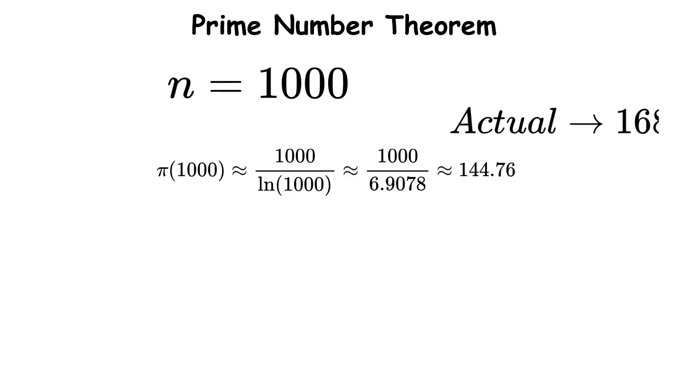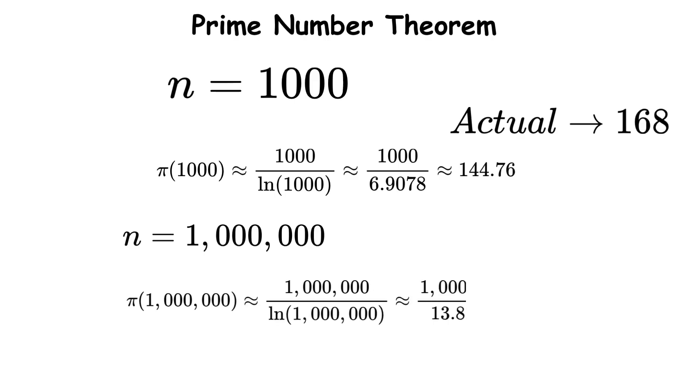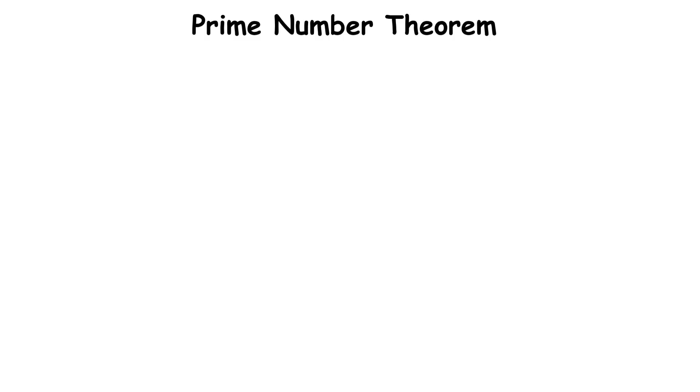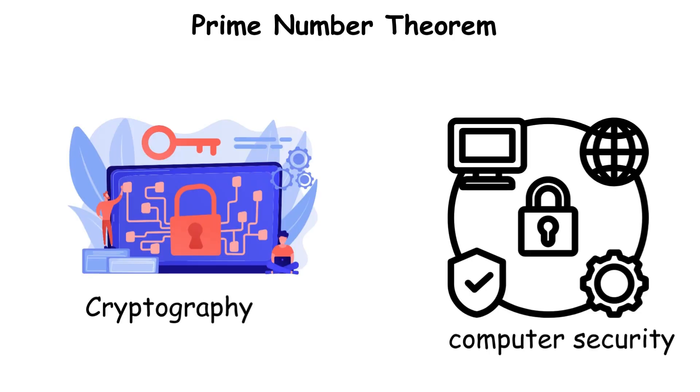For 1 million, the theorem predicts about 72,382 primes, while the actual count is 78,498. This theorem is crucial, which forms the foundation of modern cryptography and computer security.